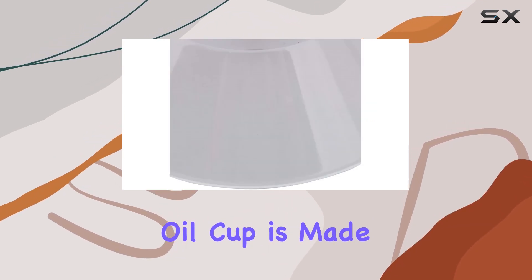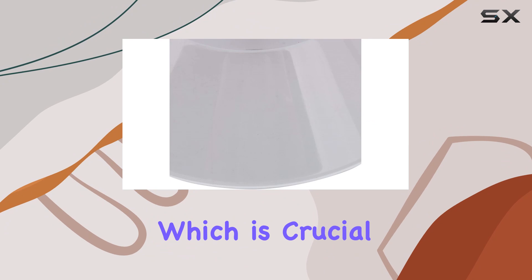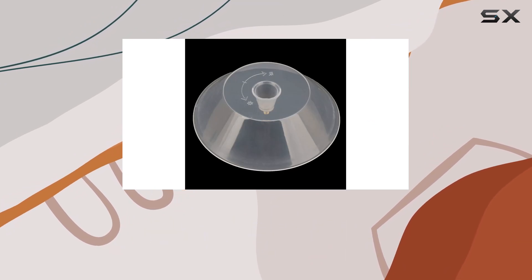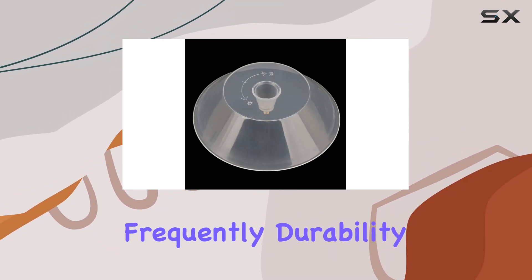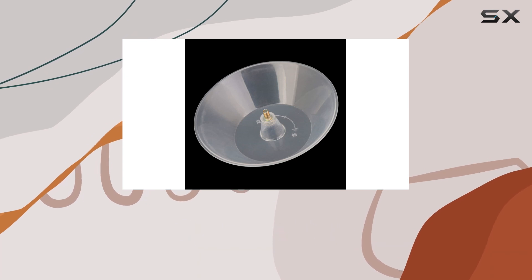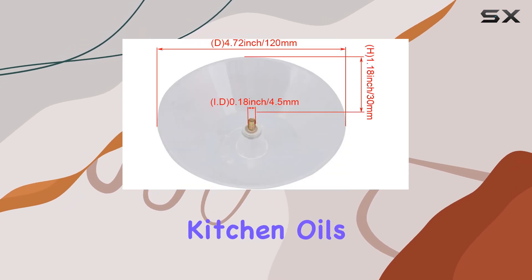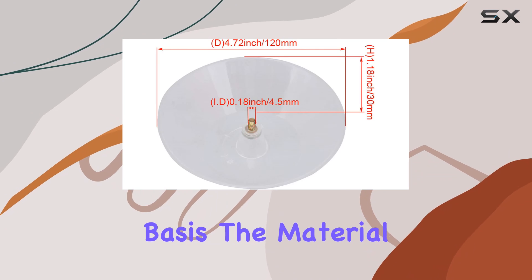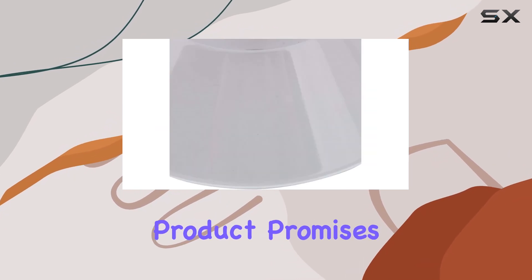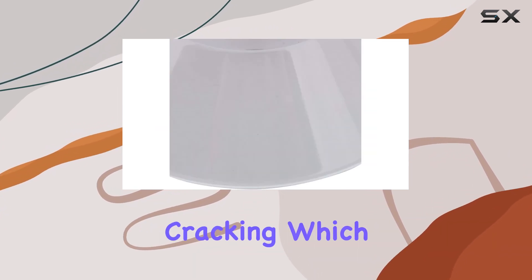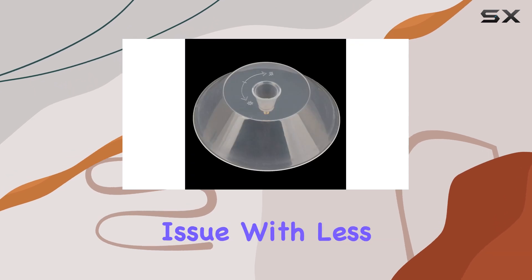First off, the oil cup is made from a durable plastic material which is crucial because nobody wants to replace these cups too frequently. Durability is a key factor here, as the grease cup is exposed to high temperatures and corrosive kitchen oils on a regular basis. The material used in this product promises to withstand these harsh conditions without cracking, which is a common issue with less sturdy versions.